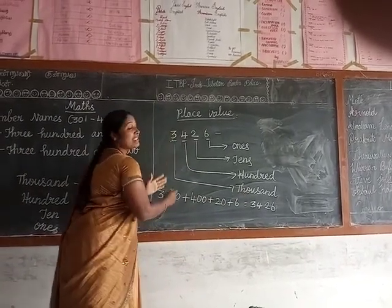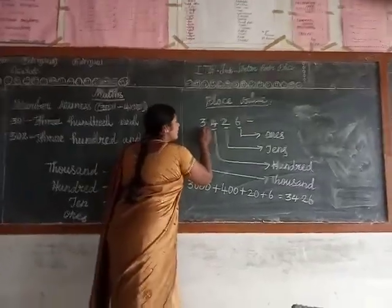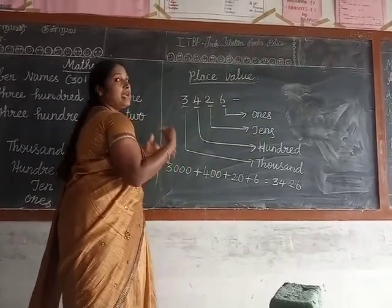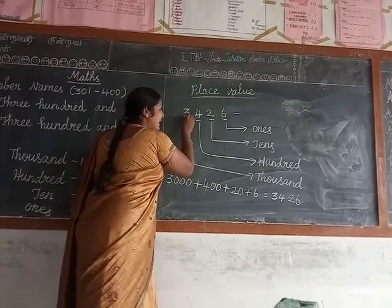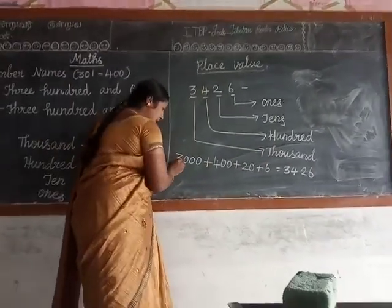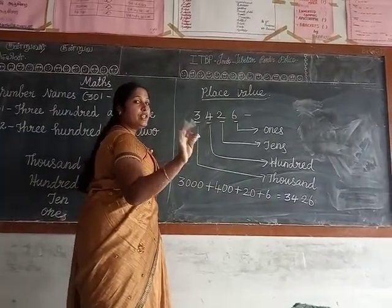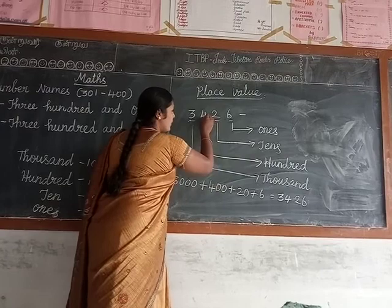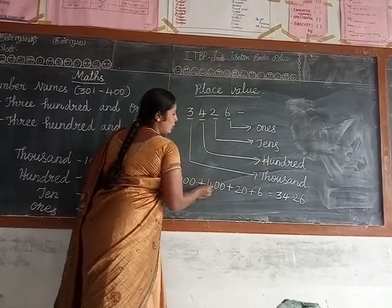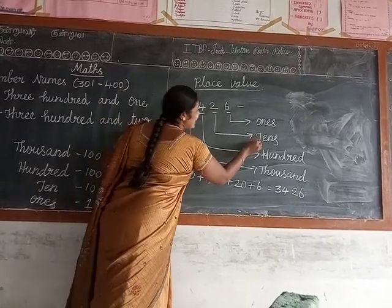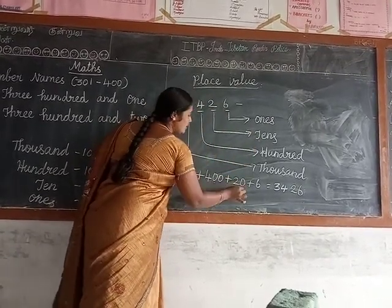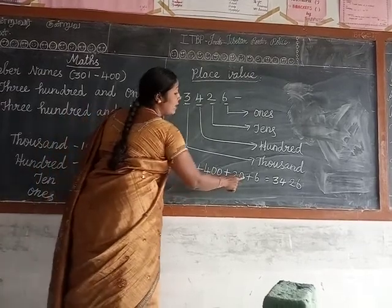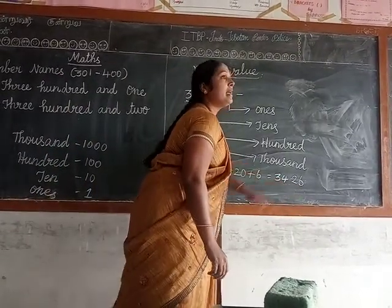Now we expand this number. You separate the number by place value like this — 1, 10, 100, 1000. The value of 3 is 3000, so we write 3 and add three zeros. Plus — the value of 4 is 400, so we write 4 and add two zeros. Then the value of 2 is 20, so we write 2 and add one zero. Then the ones place: 6. So 3426 expanded is 3000 + 400 + 20 + 6. This is the same way we spell the number.